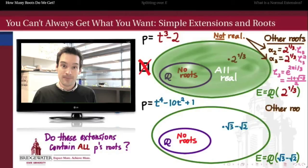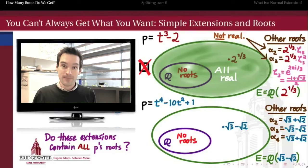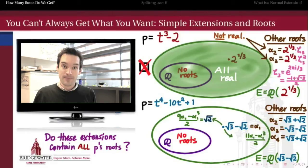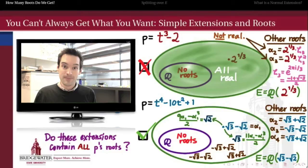What about t⁴ - 10t² + 1? What are its other roots? You can check that its other roots are exactly what we get by changing the signs on the √3 and the √2: namely √3 + √2, -√3 - √2, and -√3 + √2. Where do those other roots belong? We can check that this field, because it contains √3 - √2 (call that α₁), must also contain 9α₁ - α₁³ all over 2, which works out to exactly √2. So this field contains √2 as well. Also, it contains 11α₁ - α₁³ all over 2, which equals √3. Therefore, this extended field contains √2 and √3, and therefore it must contain all three of those other roots as well. So in this example, when we extended to include √3 - √2, we also got all of the other roots of this polynomial inside of that extension.